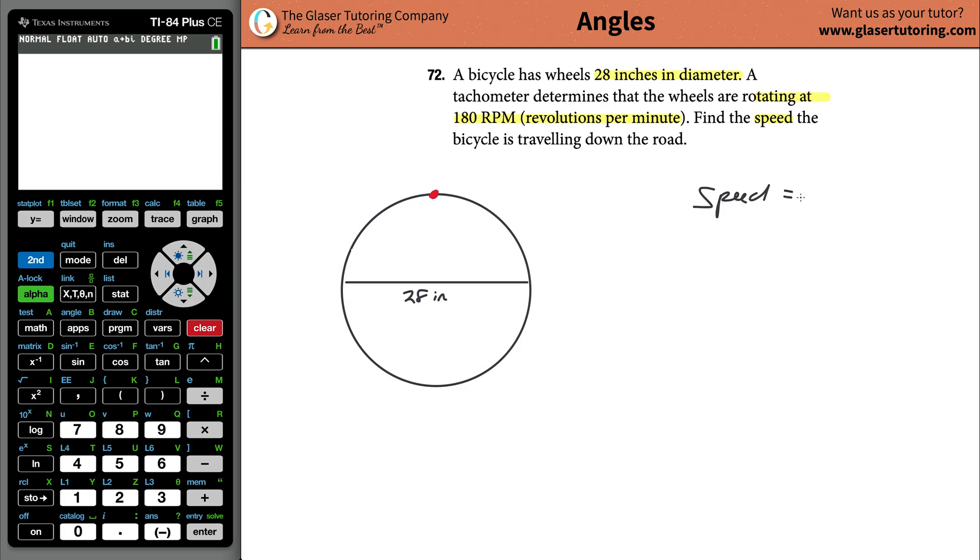Let's write that formula down: speed is simply going to always be equal to linear distance over the time it takes to cover that particular linear distance. And in this problem we're dealing with circumferential motion. So the distance that it's traveling is going to be the circumference, divided by the time it takes to cover the circumference.